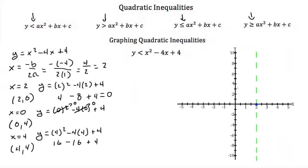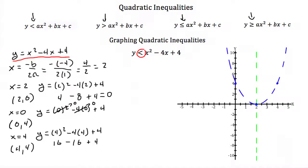I can plot (0, 4) right here, and (4, 4) right about there. We have to be careful now because our equation is not y equals x squared minus 4x plus 4 — we were just pretending it was. It's really y is less than x squared minus 4x plus 4. This less than sign means the boundary line is not part of the solution, so we draw it with a dotted line.